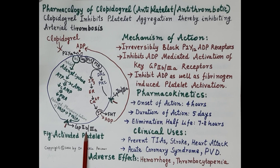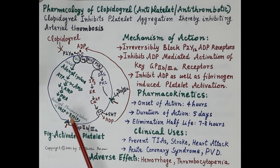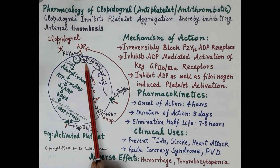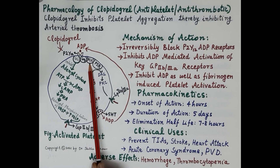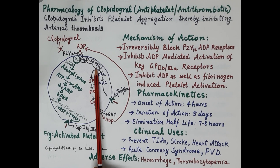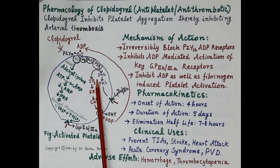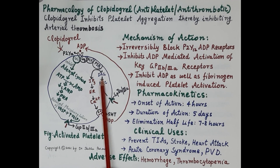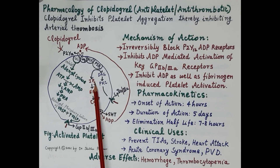On the other hand, activation of the Gq pathway stimulates phospholipase C. Phospholipase C hydrolyzes PIP2 (phosphatidylinositol 4,5-bisphosphate), a membrane-bound protein. Hydrolysis of PIP2 results in the production of diacylglycerol (DAG) and IP3 (inositol triphosphate).